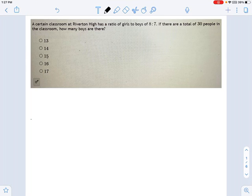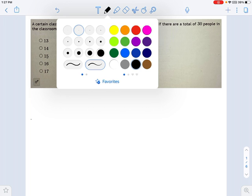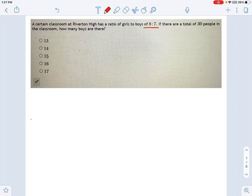Okay, so in this problem, we're given a classroom which has a girl-to-boy ratio of 8 to 7. Now, what that means is there's a little bit more likelihood of a girl being in a particular seat than a boy, because you've got 8 girls for every 7 boys in the classroom.